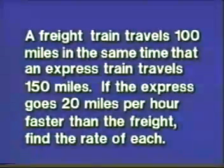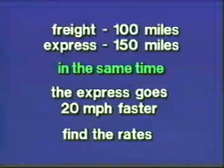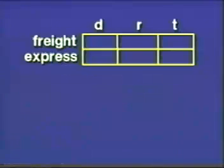Here's another problem involving distance, rate, and time. A freight train travels 100 miles in the same time that an express train travels 150 miles. If the express goes 20 miles per hour faster than the freight, find the rate of each. The first thing we might look for is some statement of equality. And you see one here in the first sentence. It says, in the same time. And that's going to be an important matter when we begin to build our equation for a solution. Let's outline our information. It says the freight goes 100 miles. The express goes 150 miles. The two trains are traveling in the same time. The express train goes 20 miles per hour faster than the freight. And we're asked to find the rates of the two trains. Let's build a table of information.